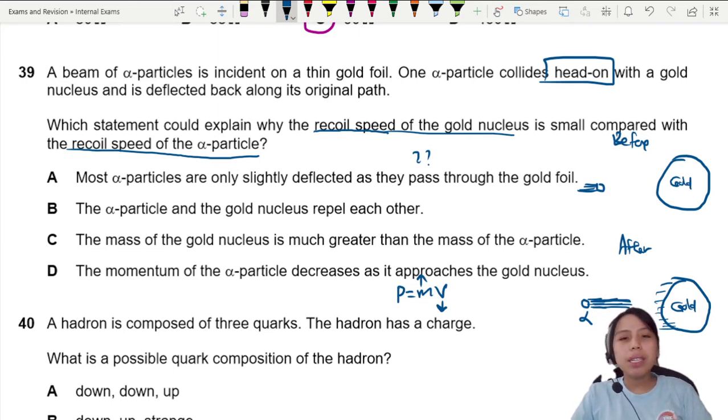B. Alpha particle and nucleus repel each other. I mean, that's true. But it doesn't explain the recoil speed. Remember, explain. We're trying to explain. It's true, but it doesn't explain. So it doesn't really help.